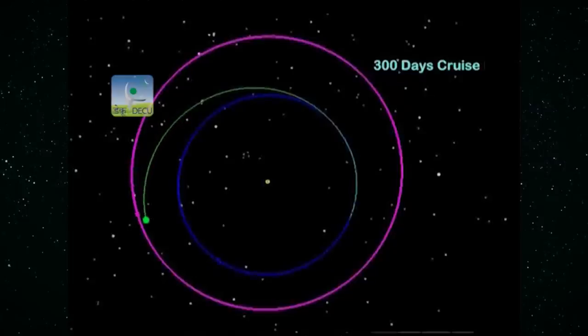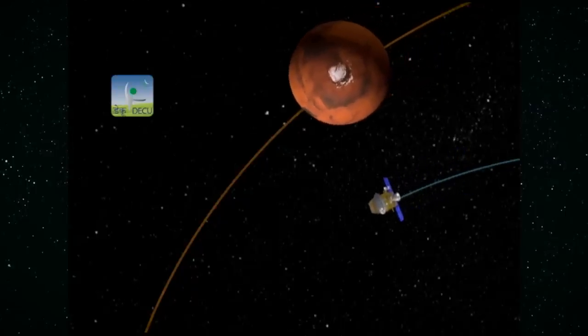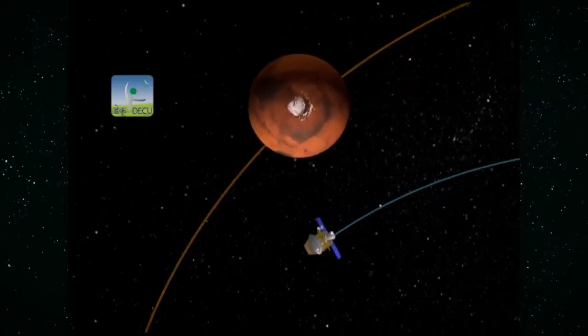In late September 2014, it hit the brakes and slotted nicely into orbit around the Red Planet, which made India the very first country in history that's ever achieved Mars orbit on the first attempt.